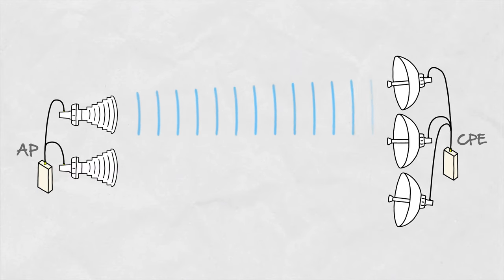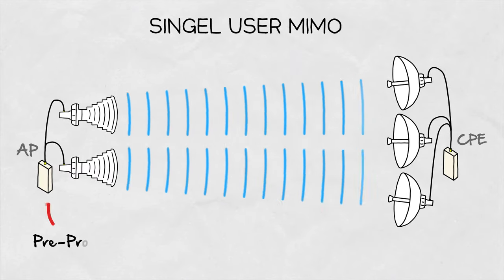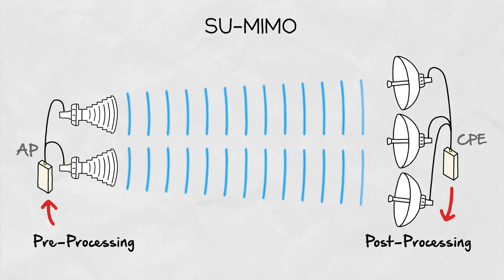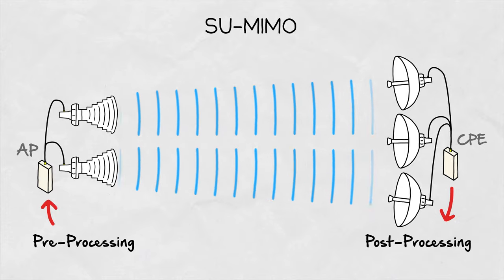In the intro to MIMO, we talked about single-user MIMO, where the pre- and post-processing happens on both sides of a link – the access point and the CPE.